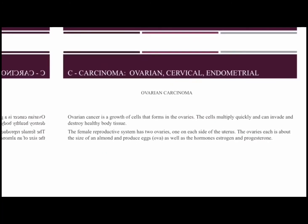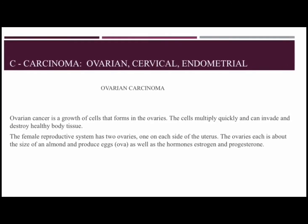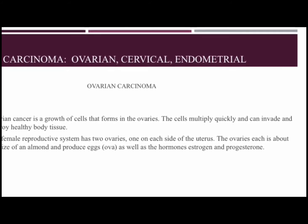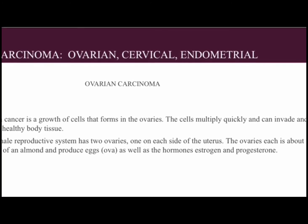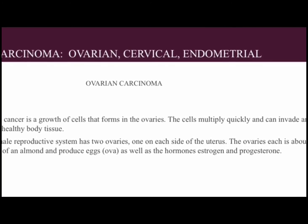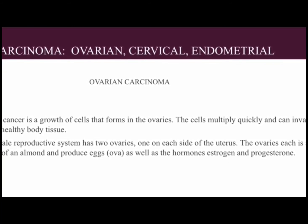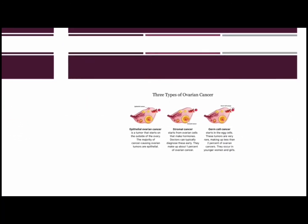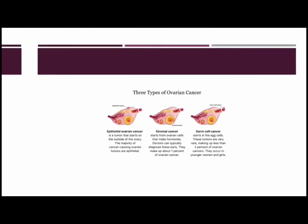Ovarian cancer is a growth of cells that forms in the ovaries. The cells multiply quickly and can invade and destroy healthy body tissue. The female reproductive system has two ovaries, one on each side of the uterus. The ovaries are about the size of an almond and produce eggs as well as the hormones estrogen and progesterone. There are three types of ovarian cancer: epithelial ovarian cancer, stromal cancer, and germ cell cancer.